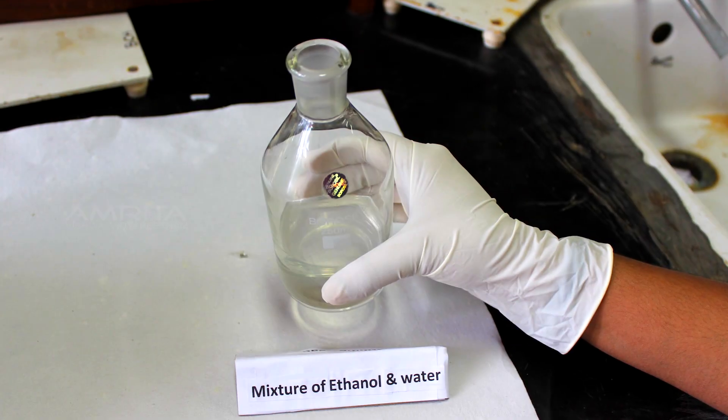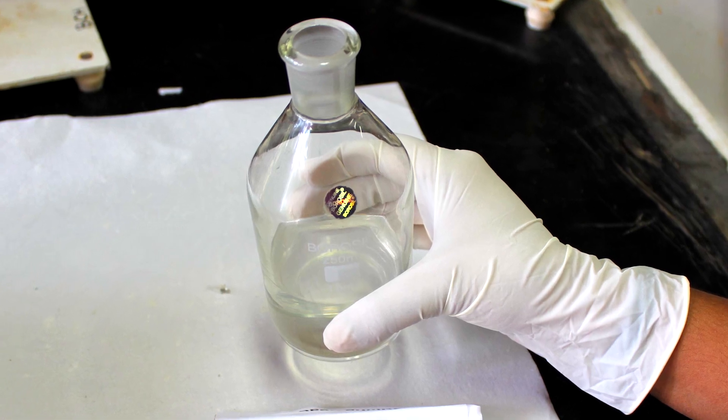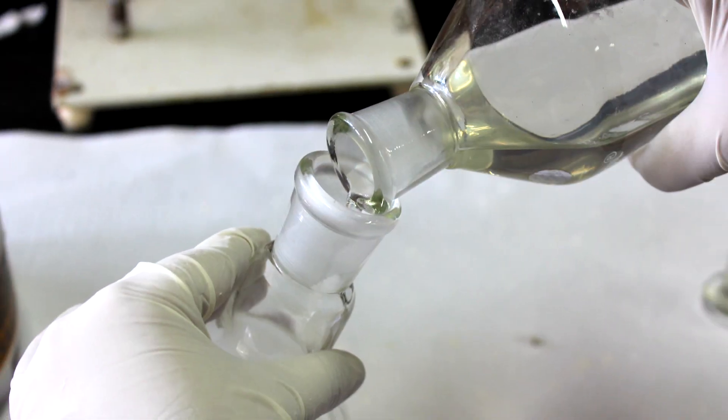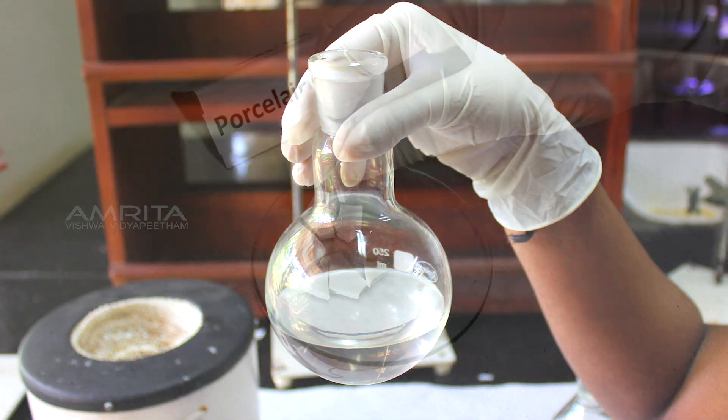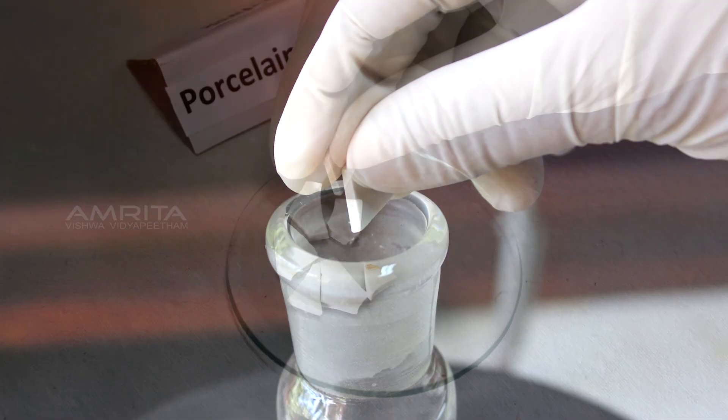Procedure. Take a mixture of ethanol and water and pour it into a 250ml RB flask. Take some porcelain chips and put it into the mixture.